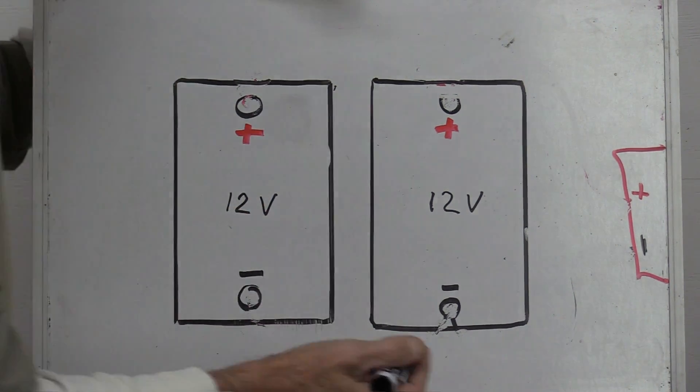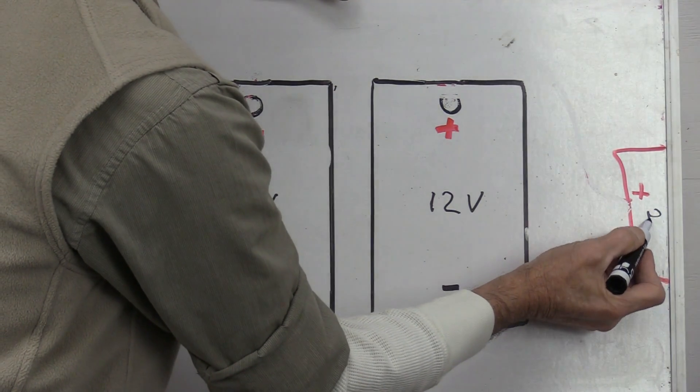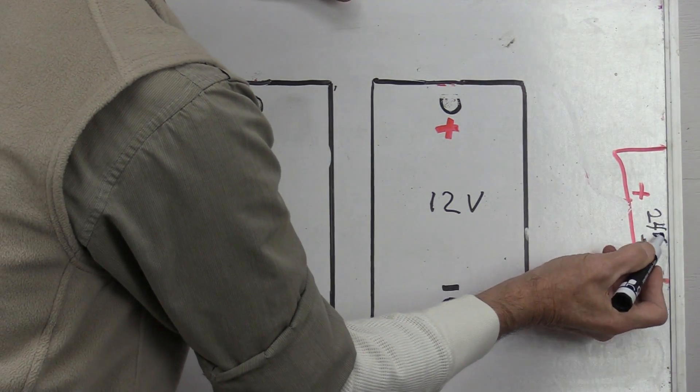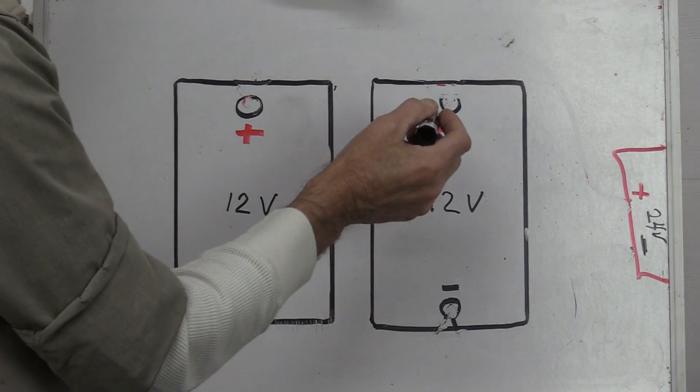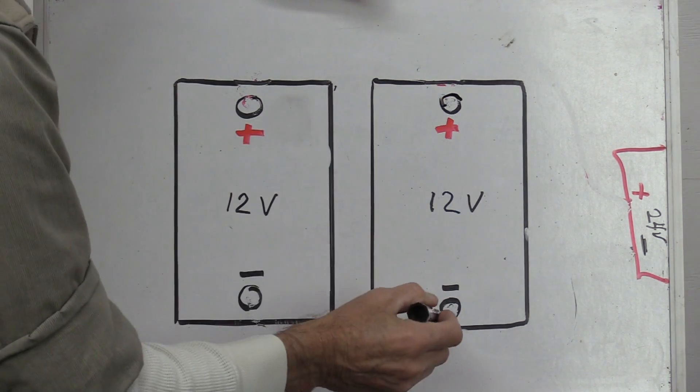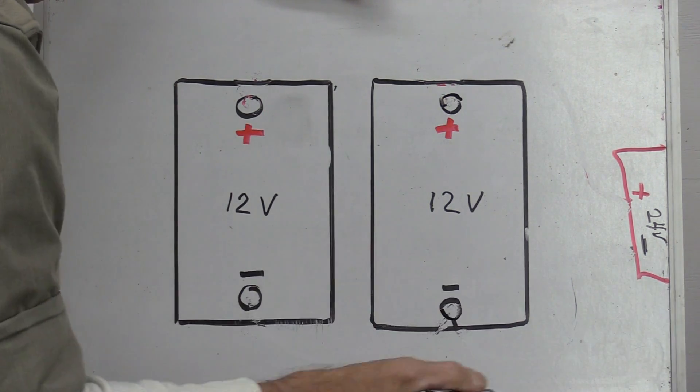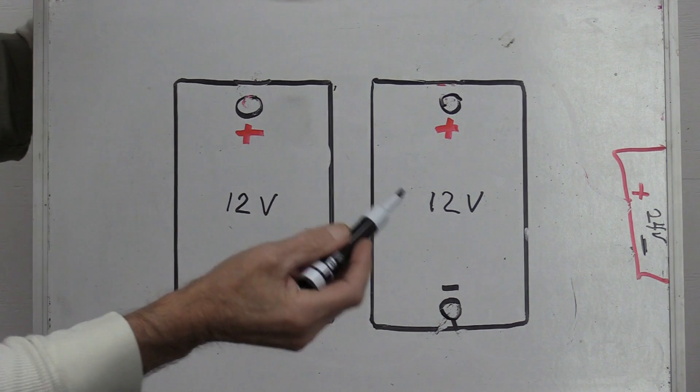So now let's just say we have a 24 volt inverter, a 24 volt wind turbine, we want a 24 volt system. It's pretty simple. Two 12 volt batteries, that's what we're going to use for an example. This is how it works.